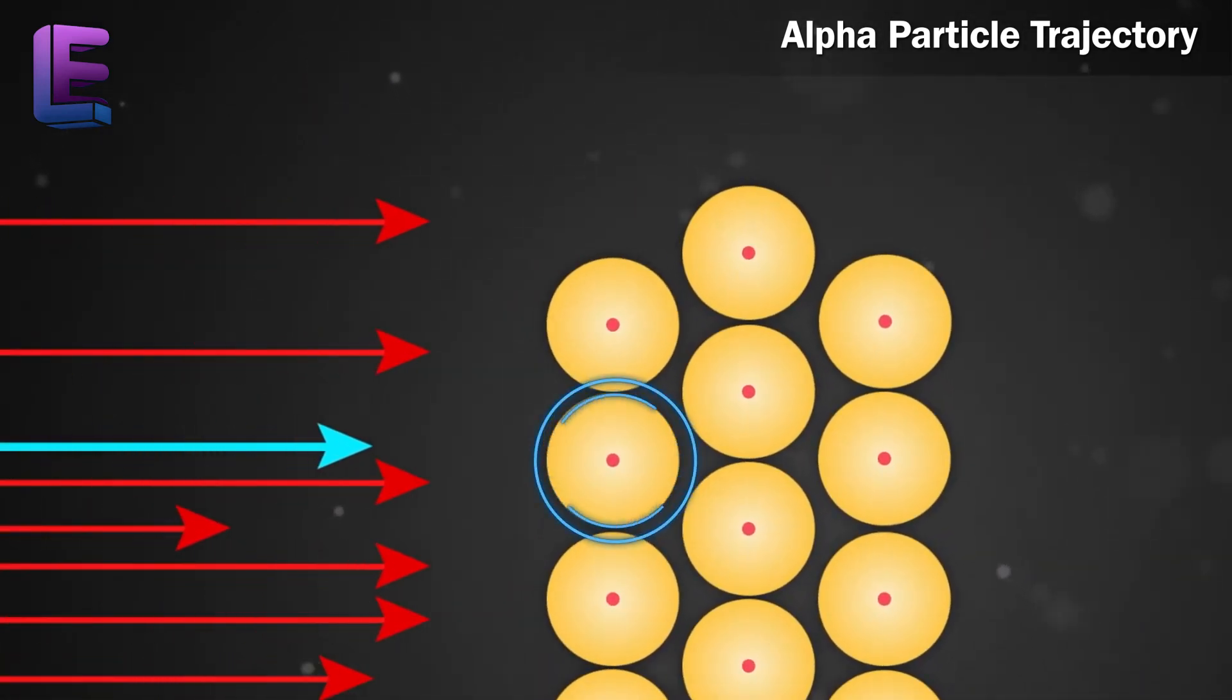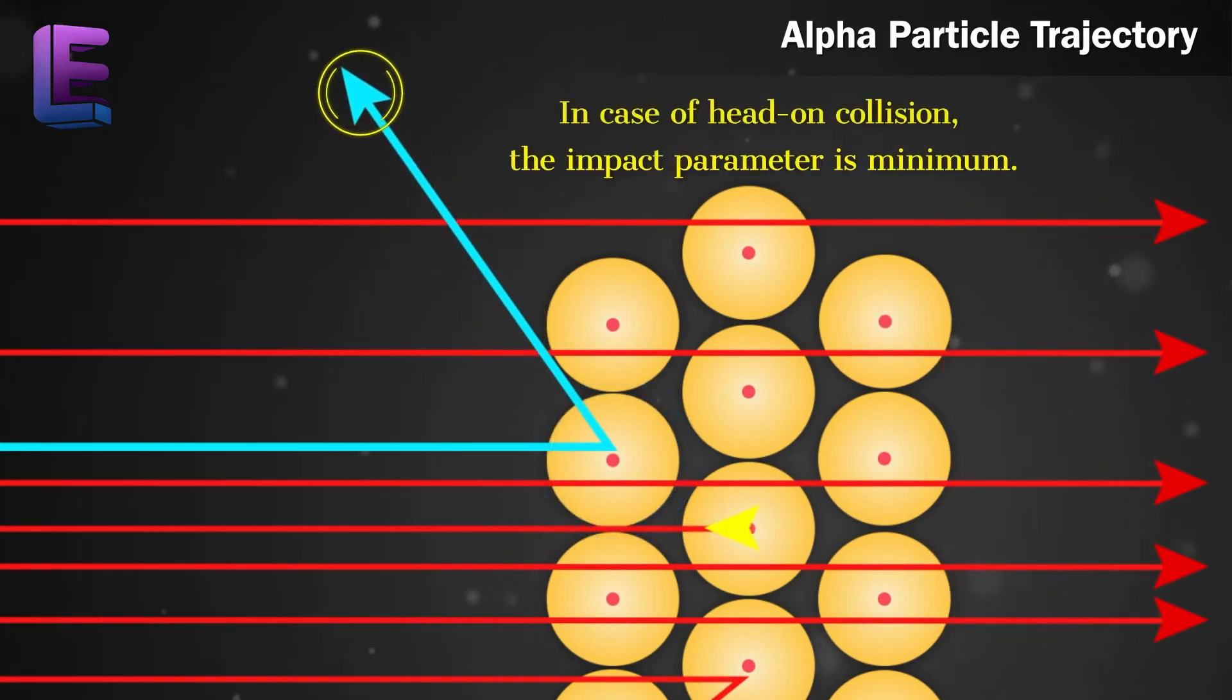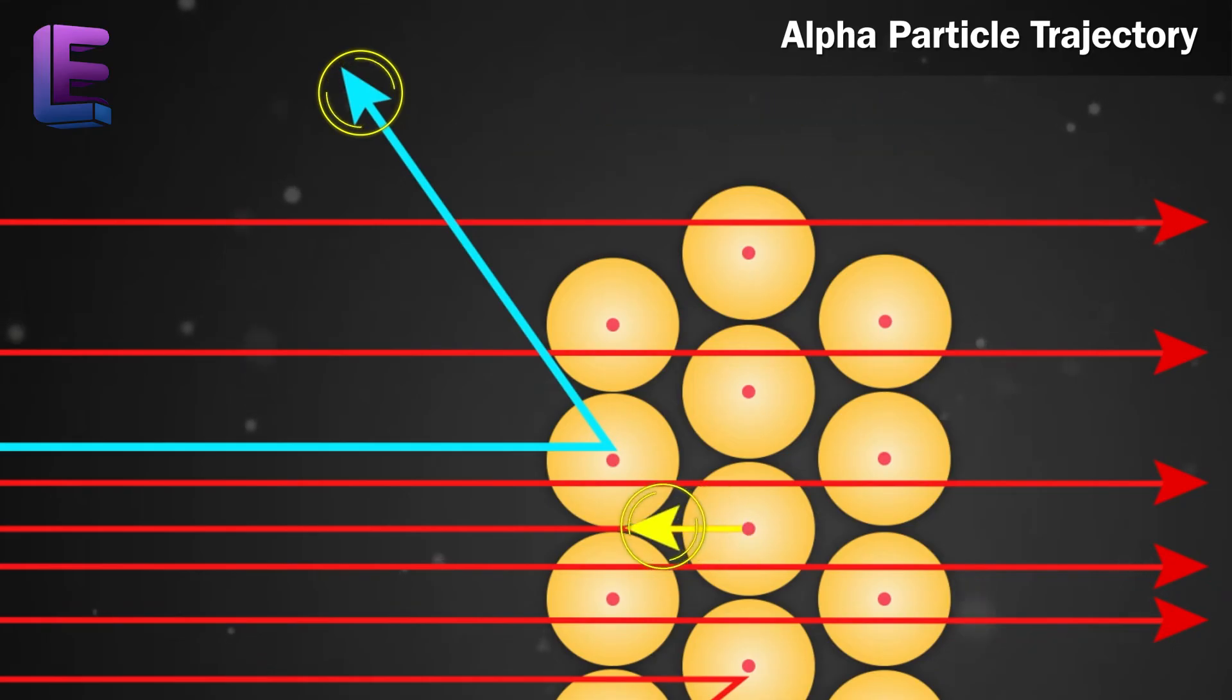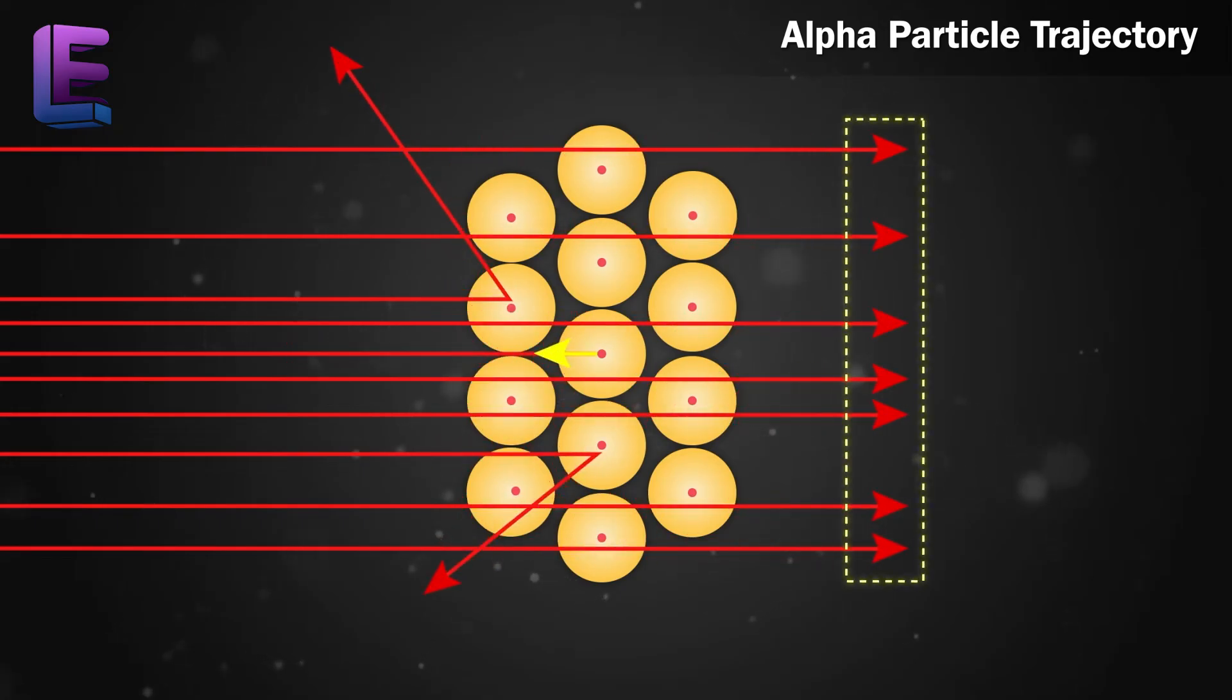The alpha particle closest to the nucleus suffers the largest scattering. In case of a head-on collision, the impact parameter is minimum and the alpha particle rebounds back. For a large impact parameter, the alpha particle goes nearly undeviated and has a small deflection.